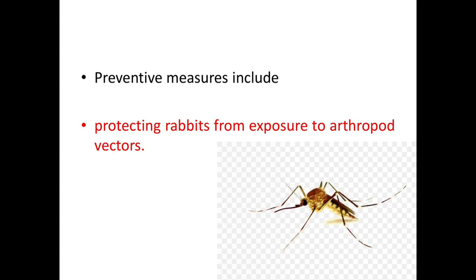Preventive measures include protecting rabbits from exposure to arthropod vectors like mosquitoes, fleas, and biting flies, because these vectors play an important role in the spread of the disease. The disease is also spread by direct contact, so control measures also involve euthanasia and burying of infected rabbits.